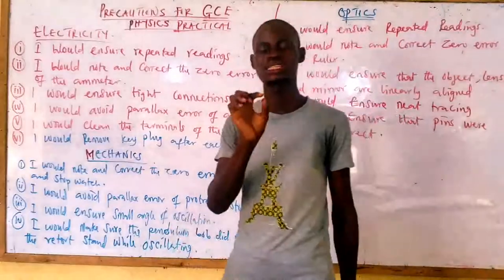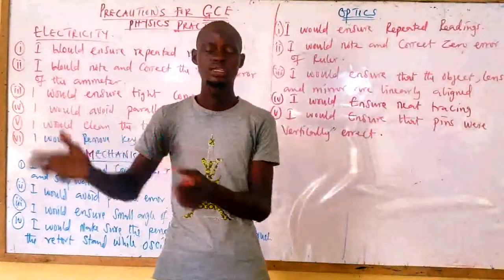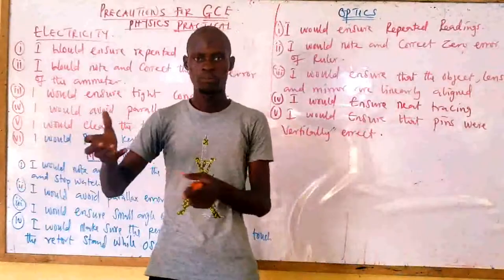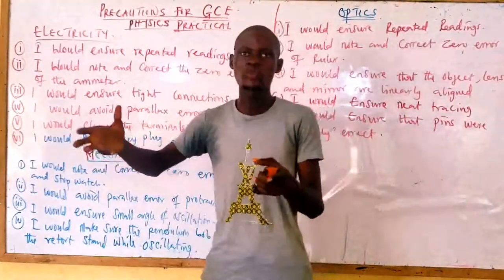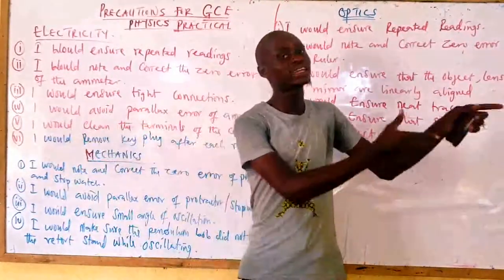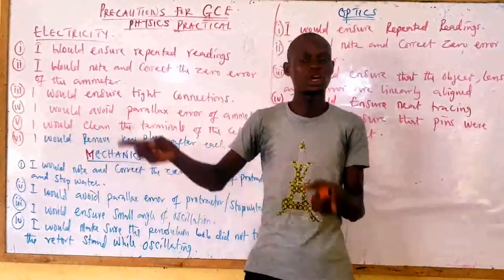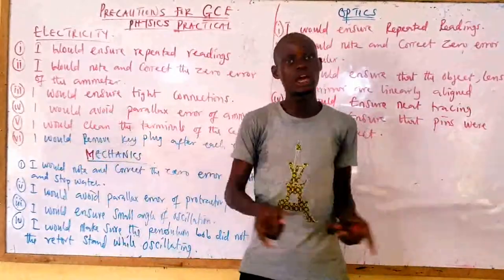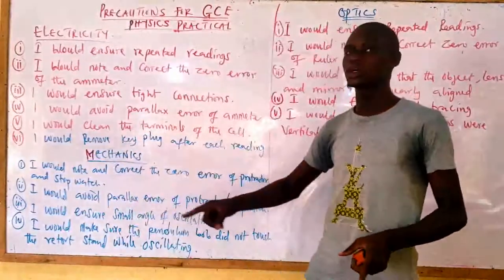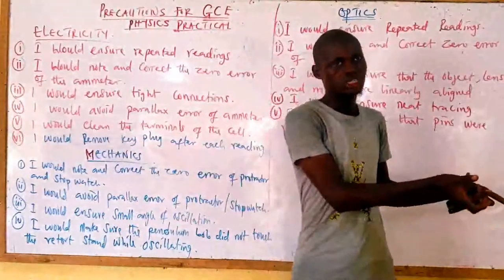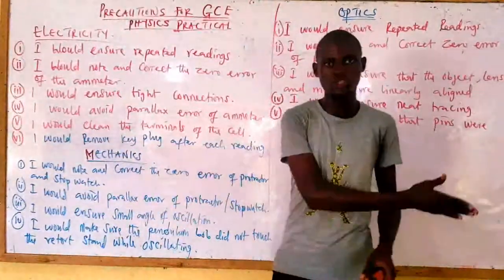The next precaution is: I would ensure a small angle of oscillation. You use this precaution if you are performing an experiment on a simple pendulum. Before you set it into oscillation, you need to use a small angle, because a large angle of oscillation might introduce error. So you set it at a small angle and leave it to perform its oscillation.